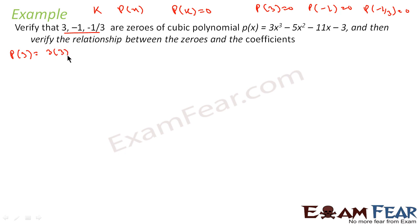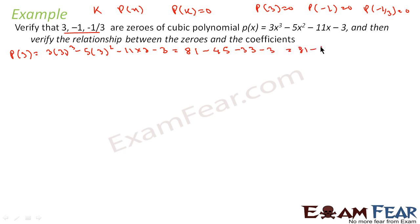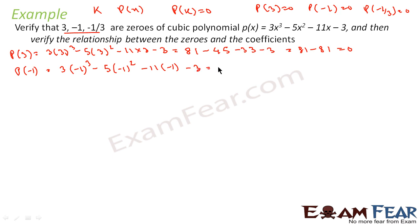p(3) = 3(3³) − 5(3²) − 11(3) − 3 = 3×27 − 5×9 − 33 − 3 = 81 − 45 − 33 − 3 = 81 − 81 = 0. Now p(−1) = 3(−1)³ − 5(−1)² − 11(−1) − 3 = −3 − 5 + 11 − 3 = 0. So p(−1) is also 0.